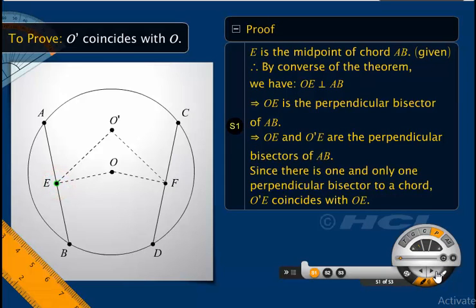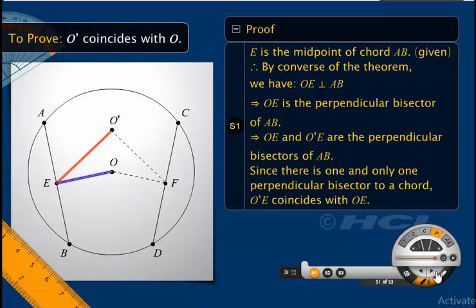So E is the midpoint of AB. By the converse of the theorem, which states that the line drawn through the center of a circle to bisect a chord is perpendicular to the chord, O'E is perpendicular to AB. That means O'E and OE are both perpendicular bisectors of AB. But since there can be one and only one perpendicular bisector to a chord, O'E coincides with OE.